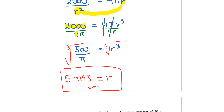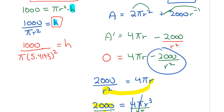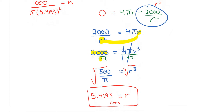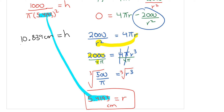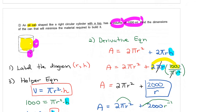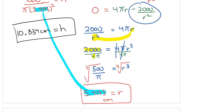To find the height, go back to the helper equation: h equals 1,000 divided by (π times 5.4193 squared). Using a calculator gives h equals approximately 10.839 centimeters. So those are the values of r and h that minimize the material required to build this object. There's a lot of algebra with these kinds of problems, so make sure you take your time to work through them.